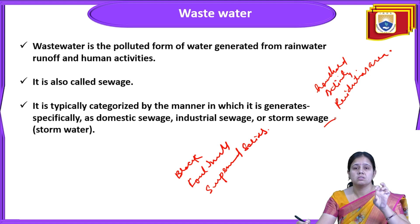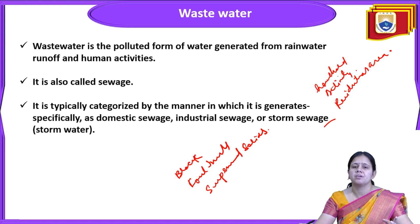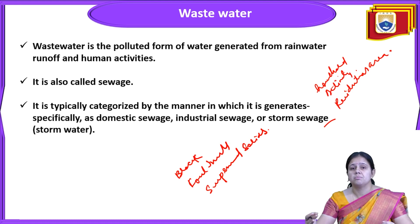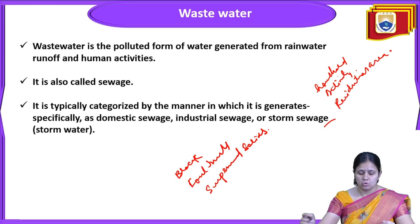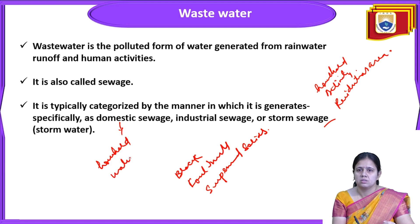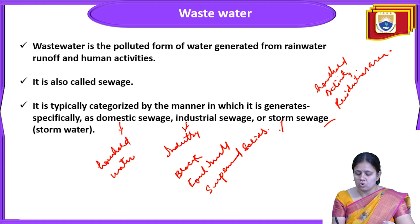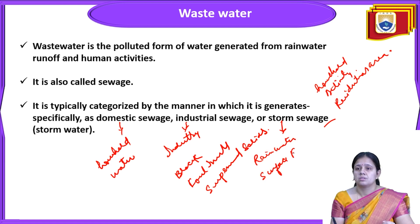Wastewater is categorized into different categories. The wastewater generated from residential activity is called domestic sewage. The water generated from industry is called industrial sewage. The water generated by runoff or rainwater is called stormwater. So domestic is from household activity, industrial is from industry, and storm is from rainwater or surface runoff.